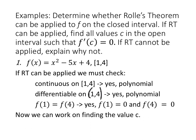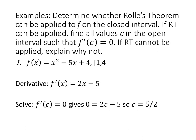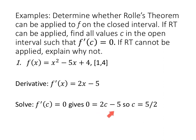The hypothesis holds for Rolle's Theorem, so we work on the conclusion. The derivative of F of X equals X squared minus five X plus four is F prime of X equals two X minus five. Setting F prime of C equal to zero: zero equals two C minus five. Adding five and dividing by two gives C equals five halves, which is in our interval. Everything works.